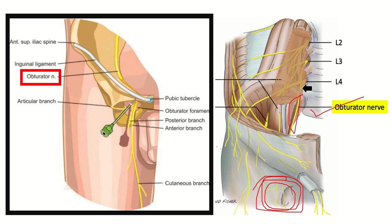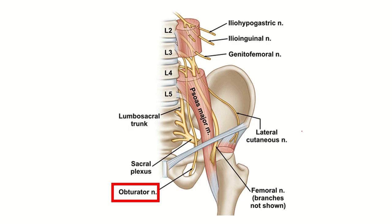The obturator nerve lies very close to the midline — it is more medial after arising. Since the uterus is present in this area, the obturator nerve may be damaged during hysterectomy. Compared to other lumbar plexus branches such as the femoral nerve, lateral femoral cutaneous nerve, genitofemoral, ilio-inguinal, and ilio-hypogastric nerves — all of which are more lateral — the obturator nerve lies most medially.